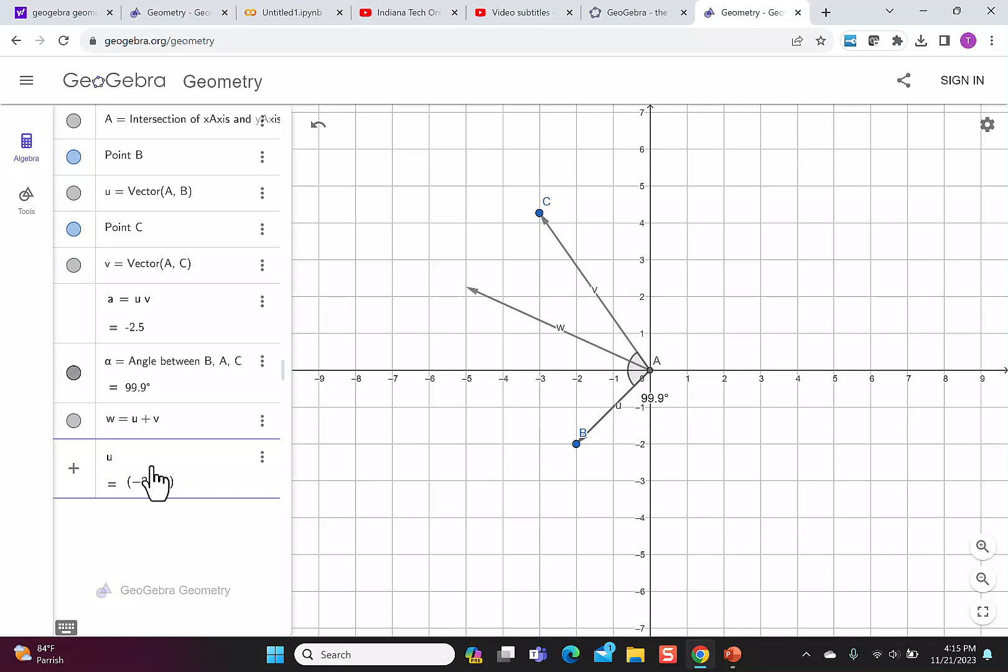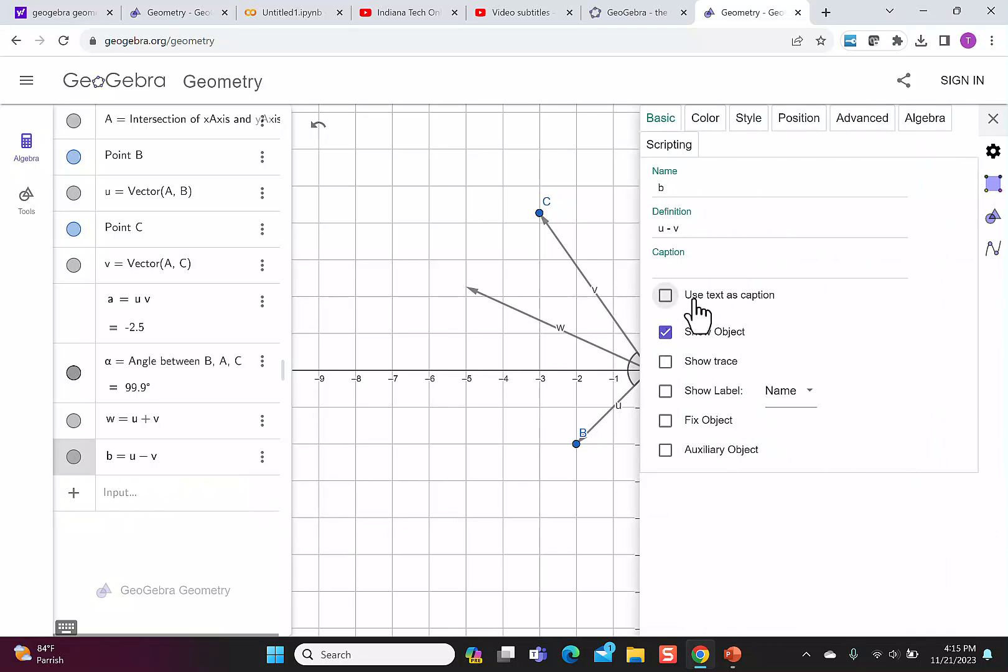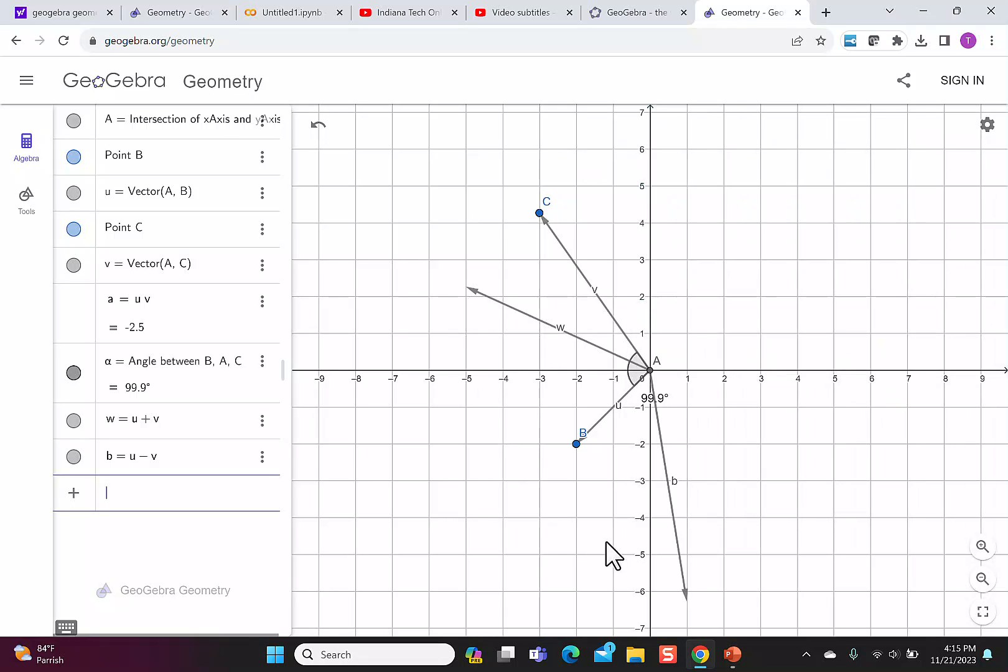You could also do u minus v. This will again label the vector and if you want to see the label, you go back to the settings and click show label. If you find your graph is getting too crowded, you can always turn things off by unclicking them so you can see only the vectors you want to view.